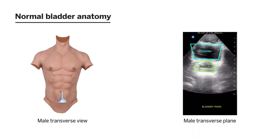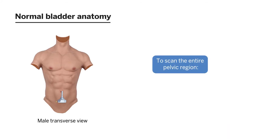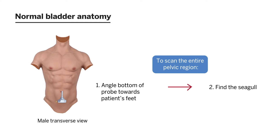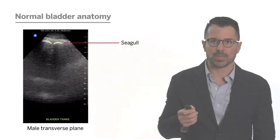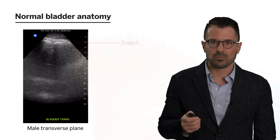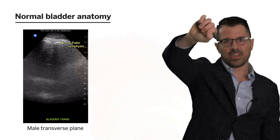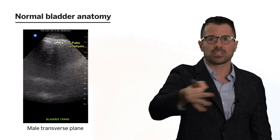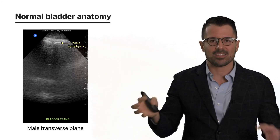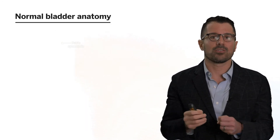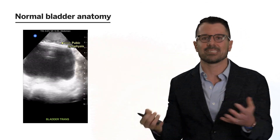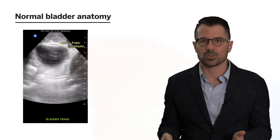Here pictured is a man. To assure myself that I'm scanning the entirety of the pelvis, I angle the probe with the indicator to the patient's right and tilt towards the patient's feet until I find a little seagull shape. That seagull represents the pubic symphysis and lets me know I've covered the entirety of the pelvis. As I fan towards the head from that seagull, I know that if the patient has a Foley catheter or the bladder is completely decompressed, I didn't miss the bladder or any fluid around it.